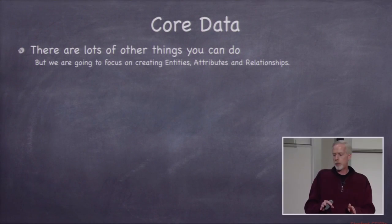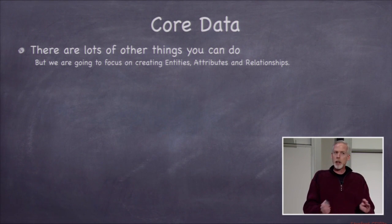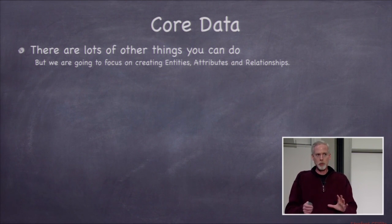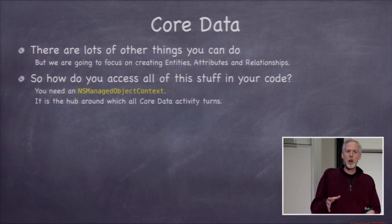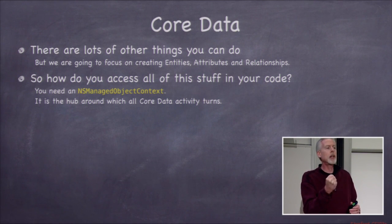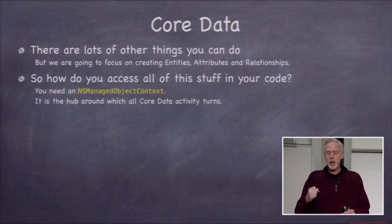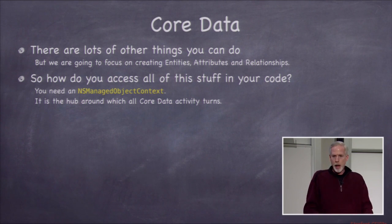That's basically how we build this map between objects and the database. We're going to focus on creating entities, attributes, and relationships, then setting their attributes, and querying for them. How do we access all of this in our code? The answer is we need an NSManagedObjectContext. This context is the hook we need to create objects in the database, set attributes, and query for objects. We do all of these through this context.